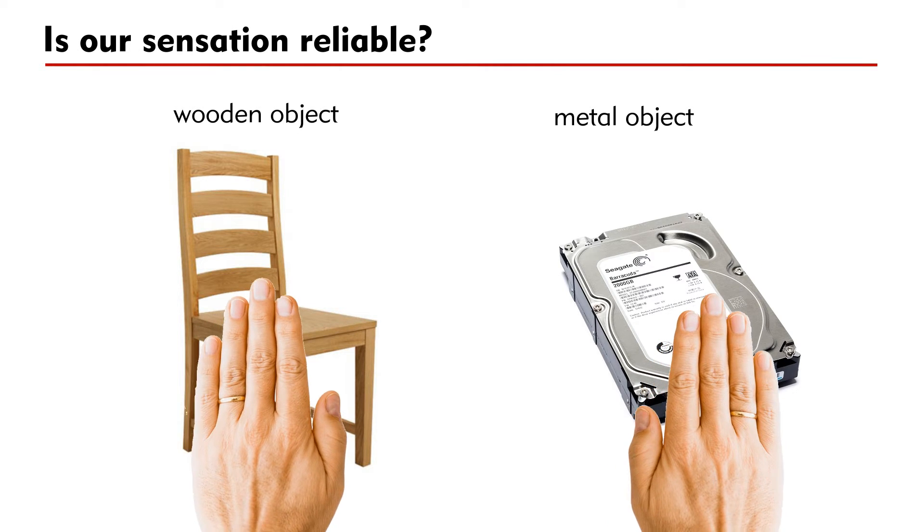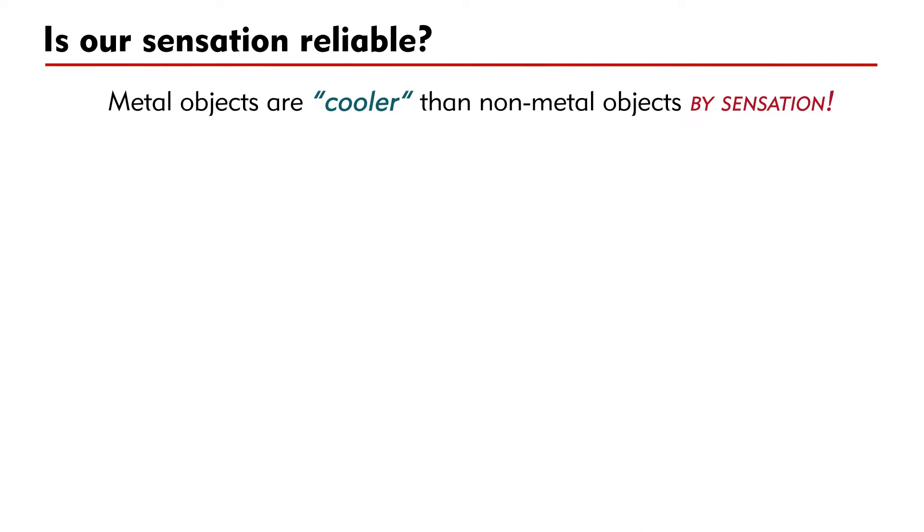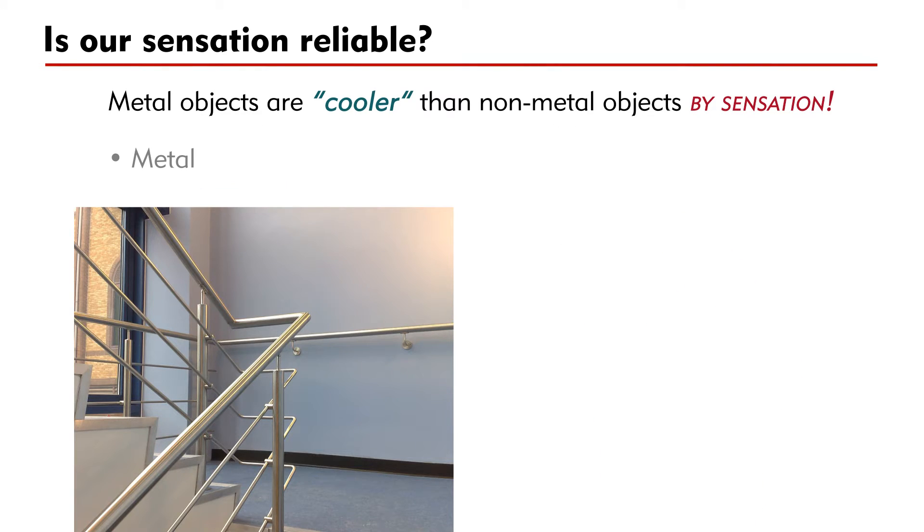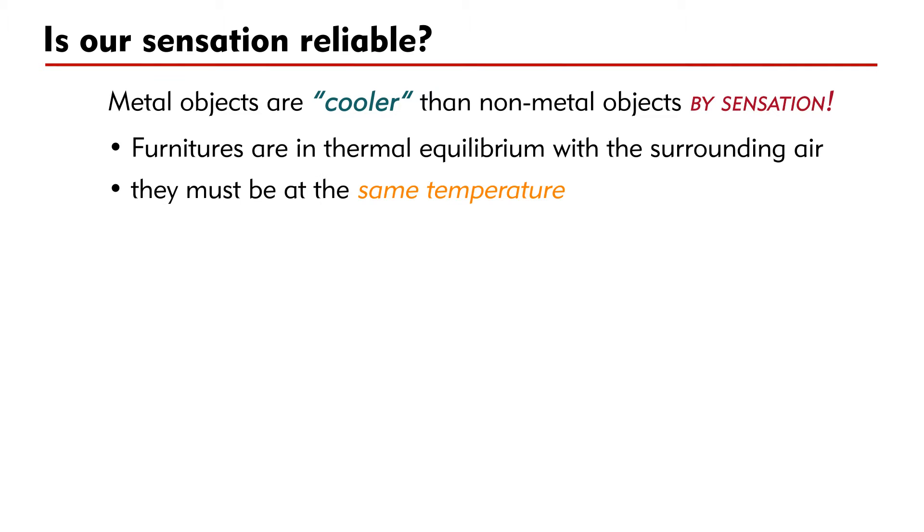Now touch a wooden object and then a metal object. Do you feel the same on touching wood and metal? Metal objects such as iron handrails are cooler in comparison to non-metal objects such as your school desk. Since furniture is in thermal equilibrium with the surrounding air, they must be at the same temperature.